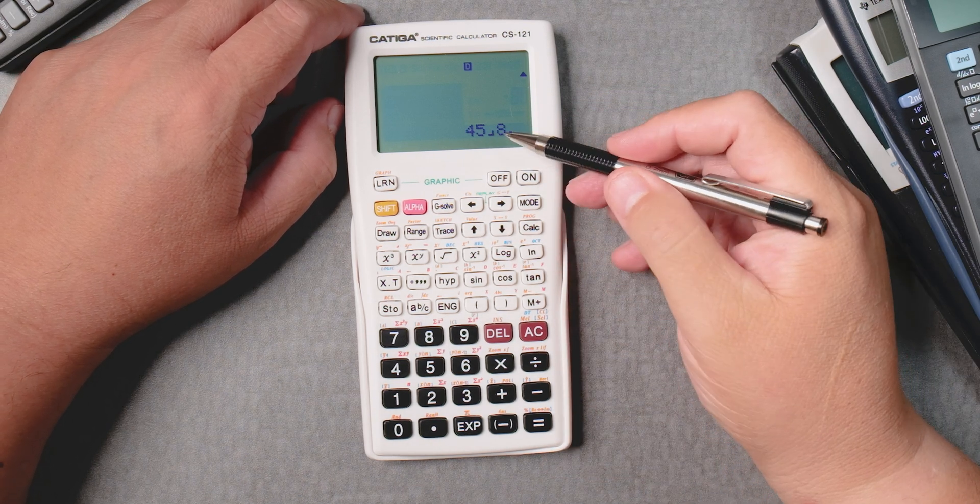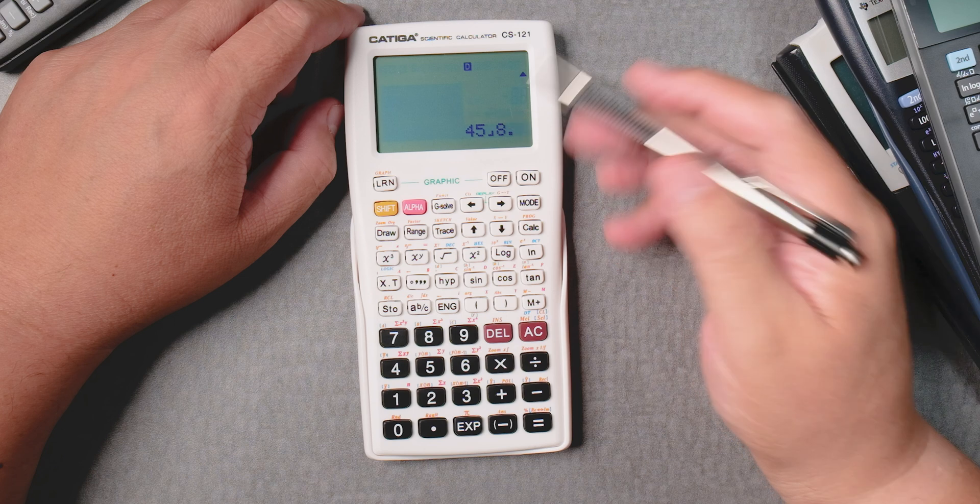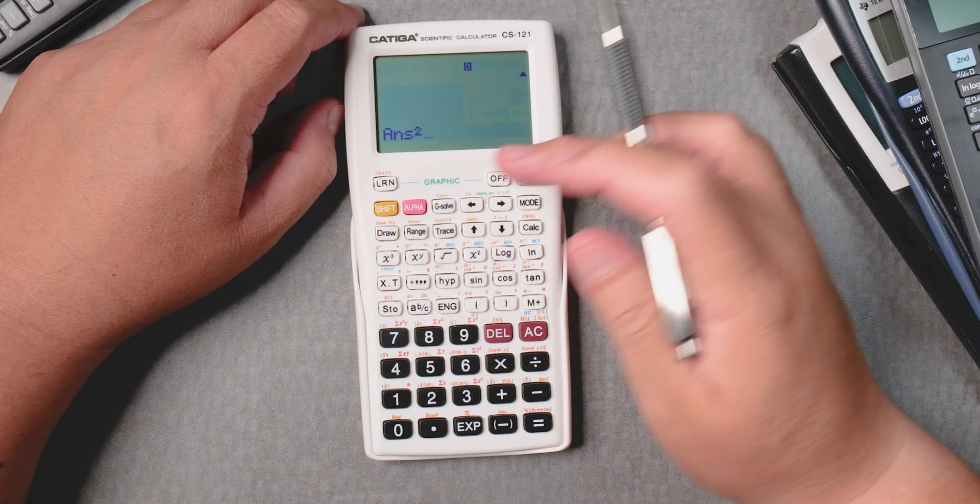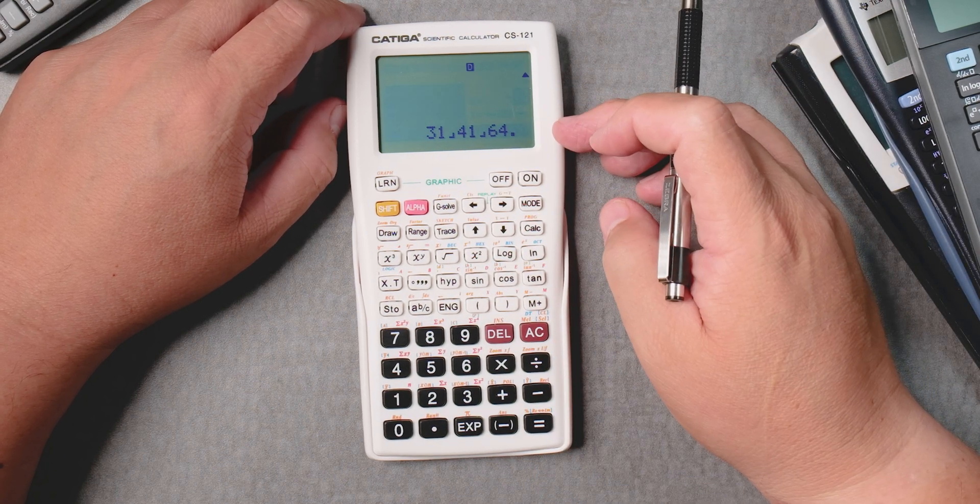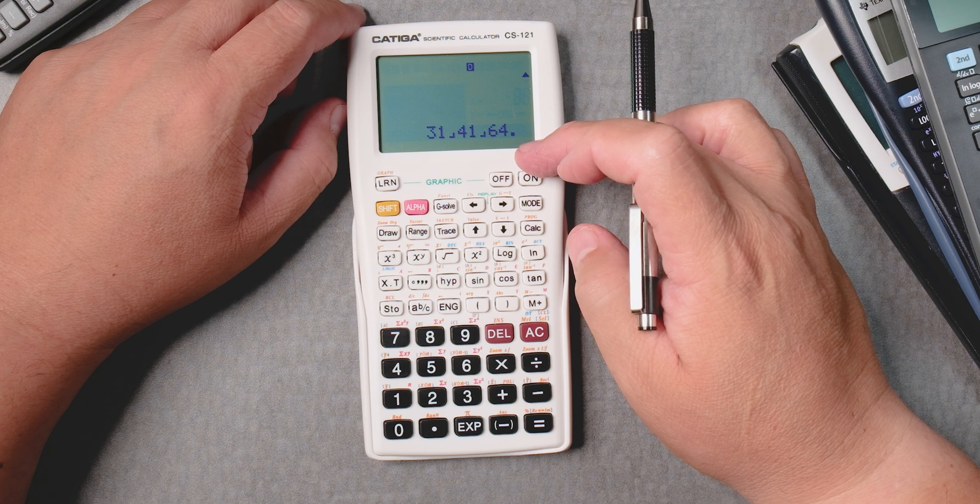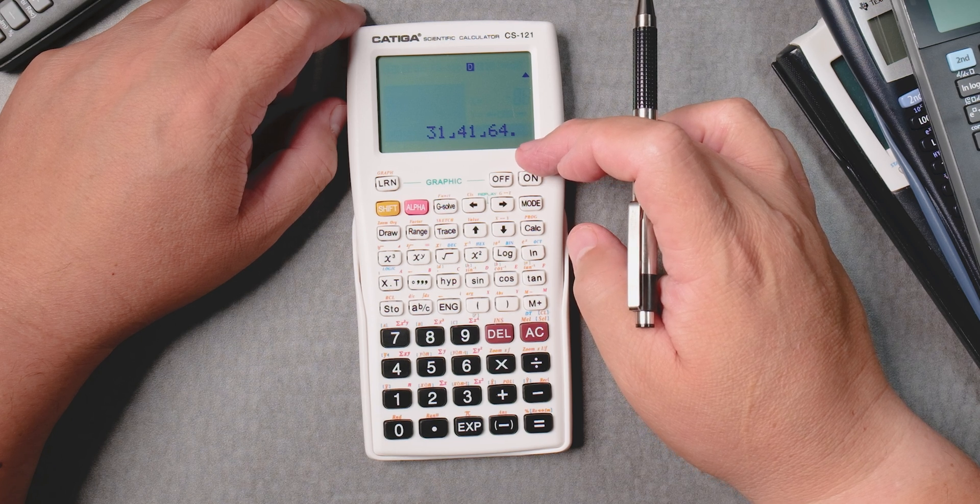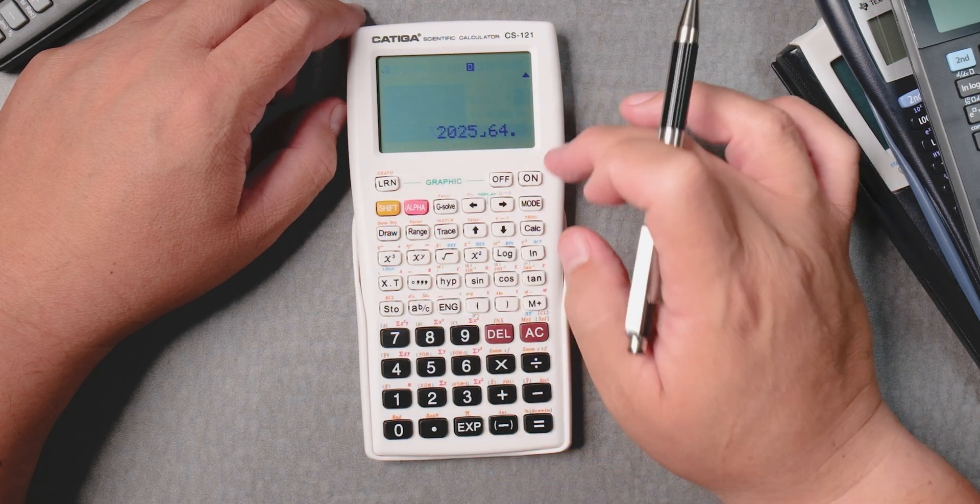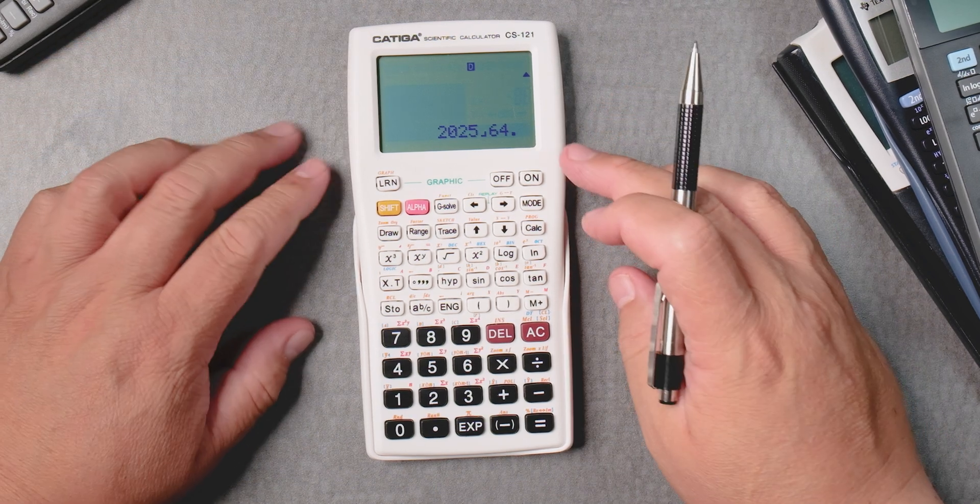Great thing about these calculators, you have a fraction and you want to square it, you can square the answer. It gives you the answer still in fraction form. You press shift ABC, it gives you the improper fraction, and it's reduced.